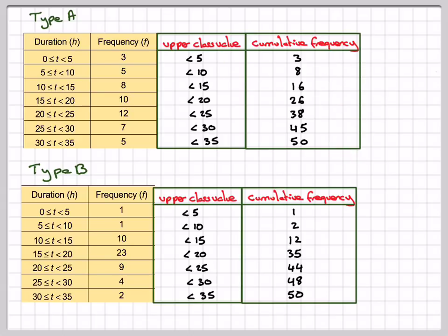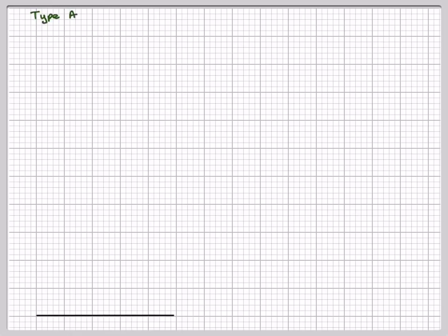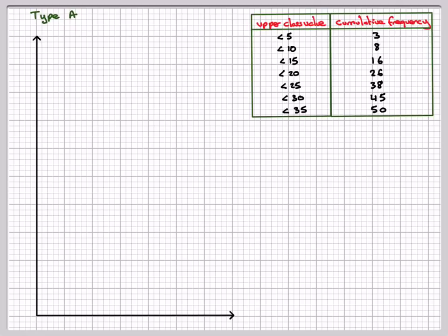We're just going to take this bit of the table here and draw our graph. So take some graph paper. We'll write down our table again. Along this axis here, we put the upper class value and we call that duration in hours. And up the y axis here, or the vertical axis, we put cumulative frequency. So we're numbering up from 5 to 50 here, 0 to 35 here.